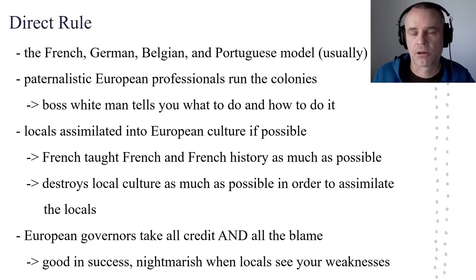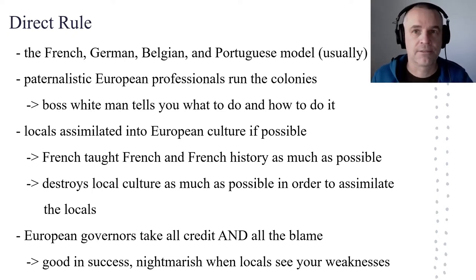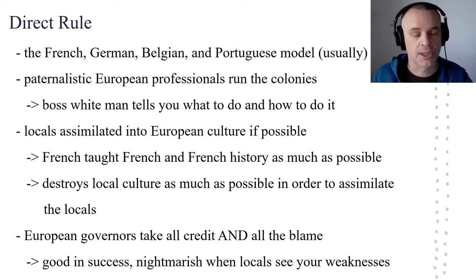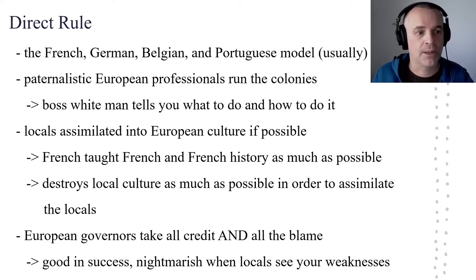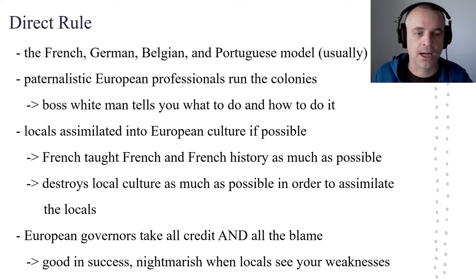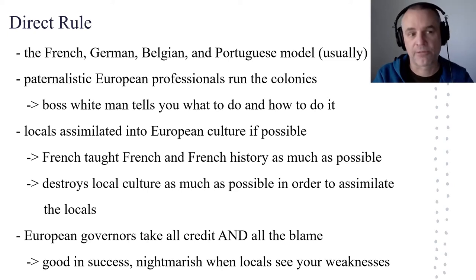Here you have a paternalistic set of European professionals coming down to run the colonies. Paternalistic is kind of like fatherly, and it usually has an insulting quality — the idea that you're looking out for these people. Of course, African people didn't feel that they needed to be looked out for, and they certainly didn't see the Europeans as their fathers. But that was kind of the logic of direct rule: that the Africans were incapable of doing anything, so you needed Europeans to tell them how to do it. And in all of the direct rule states you also see a pretty heavy attempt to assimilate African peoples into European culture — basically trying to make the Africans stop being Africans and become either French or German or Belgian or whatever.